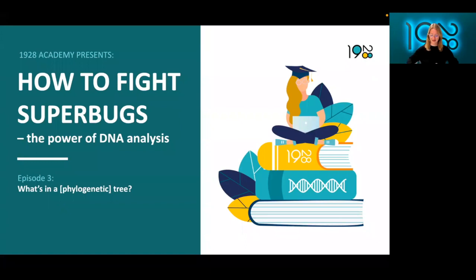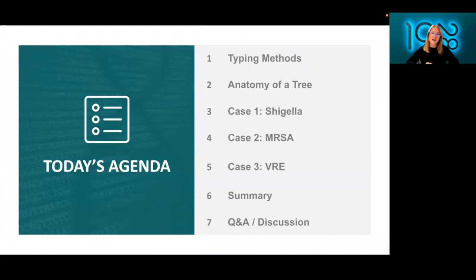So here is today's agenda. I'll start off talking about some typing methods. I went over a few in the first webinar, but I will recap just two today. Head into anatomy of a tree, what phylogenetic trees look like, and then I'll take us through three different case studies, one with Shigella, one MRSA, and one VRE. I'll wrap it up with a summary, and then have some Q&A and discussion. Feel free to add questions in the chat as we go along.